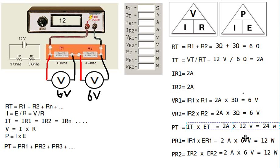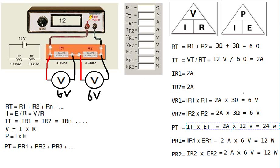We have now calculated all the different values we could want, and we can fill in our table with the resistance, current, voltage, and power for all parts of our circuit. In the next part, I'm going to do another circuit like this but with different values and a little more complexity — so watch the next part to see the same techniques applied in a slightly different situation.